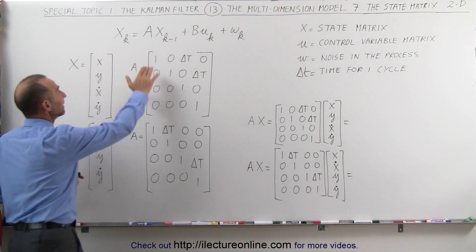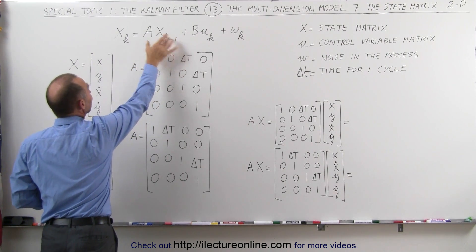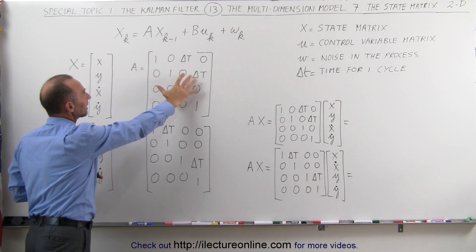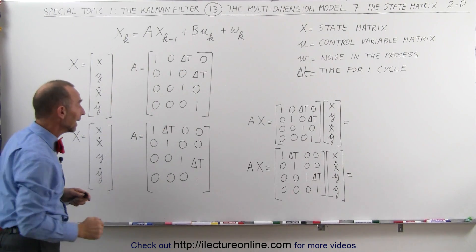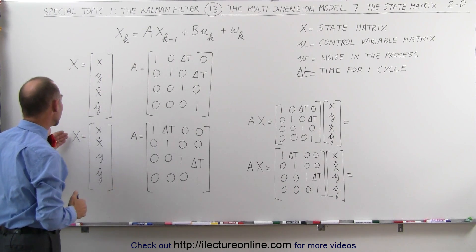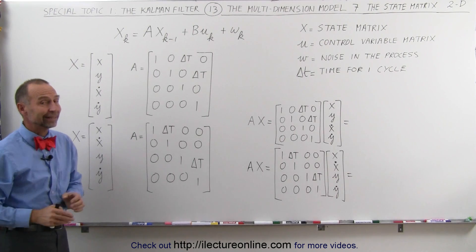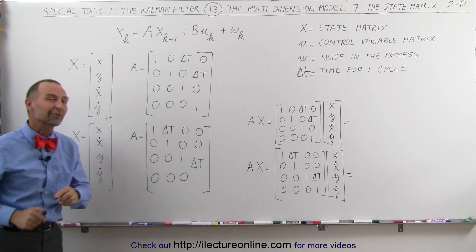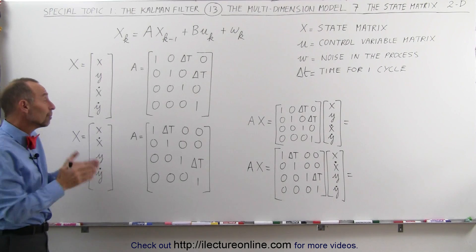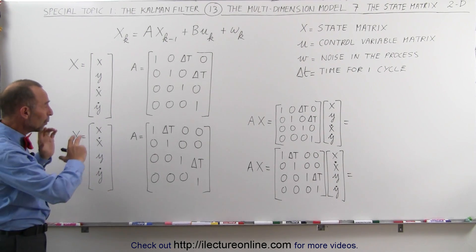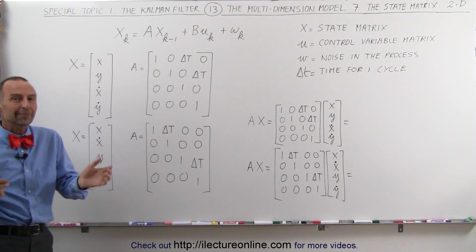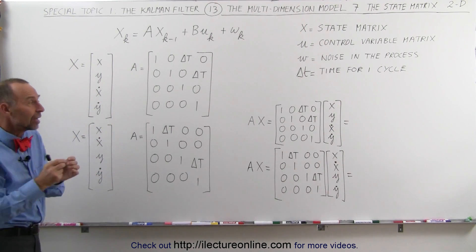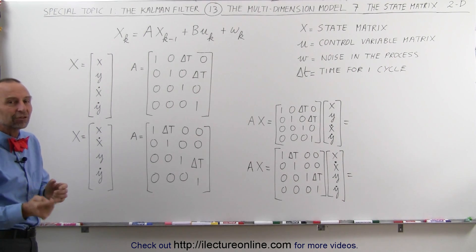The corresponding A matrices necessary to convert from one state into the next state time-wise — going from one interval to the next time interval. The A matrix will look like this if we have the state matrix expressed in the first format, and the A matrix will look like this if we have the state matrix expressed in the second format. Personally, I like the first format better, but I've seen the second format used by other people, so there you have both examples. There's nothing magical about the A matrix — it's simply required in a certain format so you can multiply the A matrix by the state matrix and get the resulting product back in the correct format for the state matrix of the next time period.